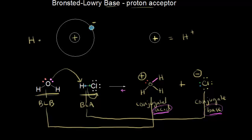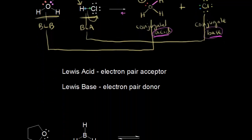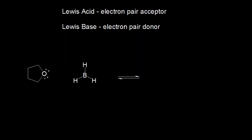That's the idea about Bronsted-Lowry. Let's look at another definition, which is actually a little more broad: Lewis acid and Lewis base. A Lewis acid is an electron pair acceptor — an easy way to remember this is 'acid acceptor.' A Lewis base is an electron pair donor. A mnemonic: think of the lowercase 'b' flipped around to get a 'd' — so base is a donor.